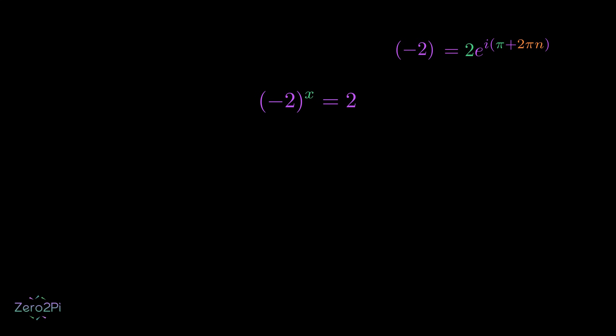Now taking the natural logarithm of both sides helps us work with the exponent. Using the logarithm property, this becomes x times the natural log of negative 2 equals the natural log of 2. The natural log for negative numbers is undefined in the real number system. But in the complex system, it can be defined and becomes a multivalued function.